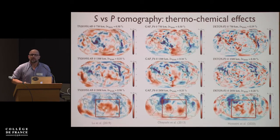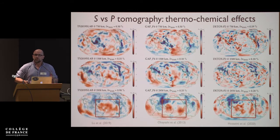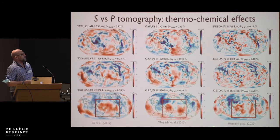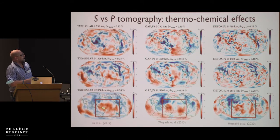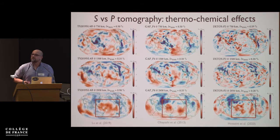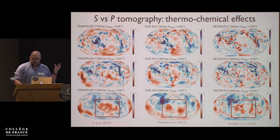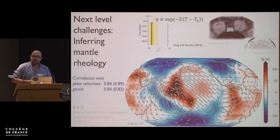We know it's more complicated than that. One way to look at the thermochemical heterogeneity that surely exists is to compare S and P wave models. Here are three fairly recent models, and you can see the Pacific anomaly looks very different in P wave models — something we've known for 20 years and are still trying to figure out. Paul is going to talk more about the lower mantle; I'll be focusing on the upper mantle.